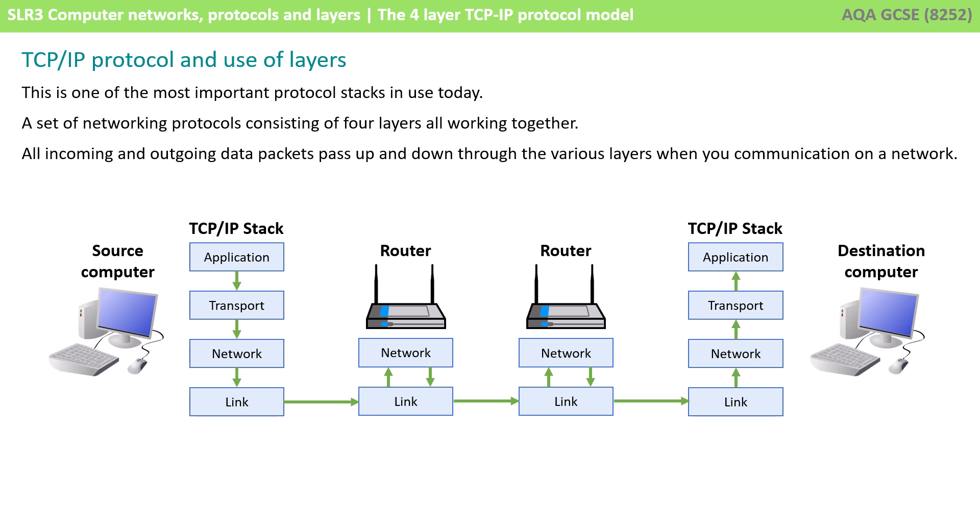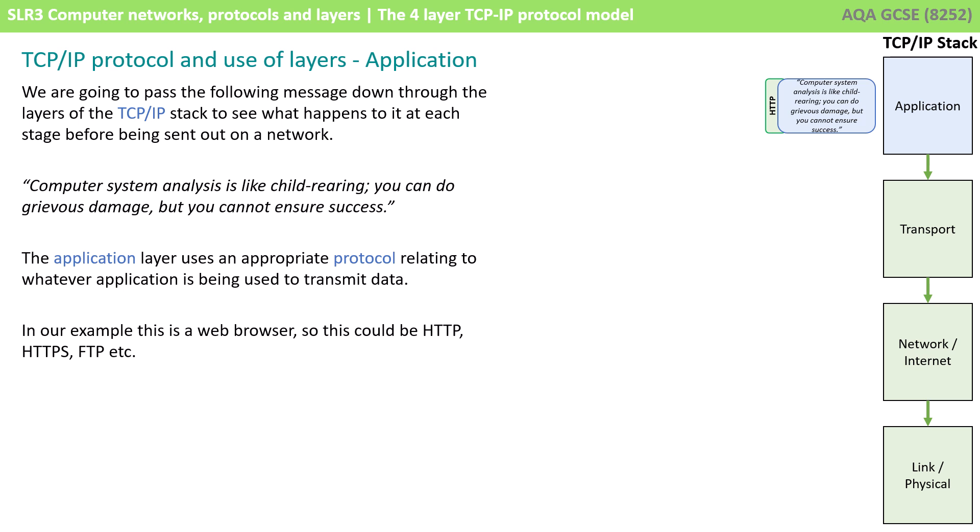Very abstractly, here you can see we have a source computer that needs to communicate with a destination computer. On the way out, it travels down through the TCP/IP stack with the various rules at each layer being applied one at a time. It reaches the link layer and gets sent on to the first router, where it moves up to the network layer and down again onto any other routers required on the way. When it finally reaches the destination computer, it travels back up the protocol stack. So we're going to take a detailed look now at the TCP/IP stack and the four layers it uses — we're going to pass a message down through the layers to see what happens at each stage before it gets sent out onto the network.